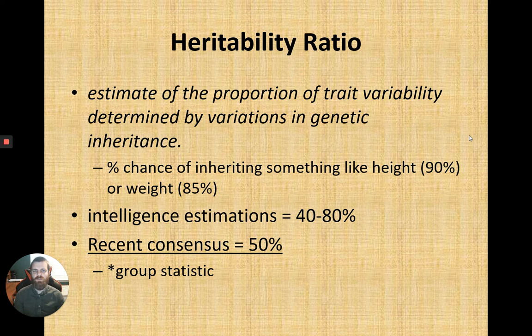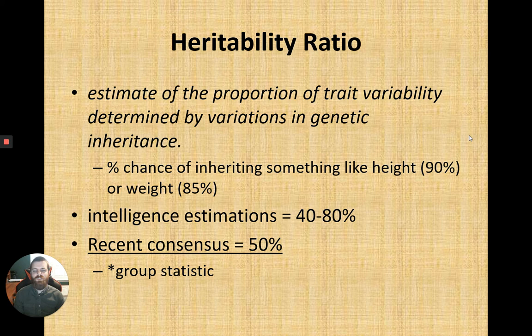Today intelligence is believed to be about 50% inherited — this is called the heritability ratio. Intelligence heritability ratios have ranged from 40 to 80% in research, but scholarly consensus settles around 50%. That means 50% comes from a natural, inherited portion, and 50% can be shaped through hard work, practice, and motivation.